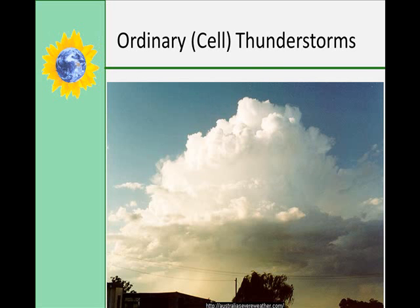Ordinary or cell thunderstorms are also known as air mass thunderstorms or pop-up thunderstorms. They typically form where surface converging winds have no significant change of either strength or direction with height — in other words, there's limited wind shearing. What goes up comes back down in the same place. This is a typical summer afternoon thunderstorm. These usually last no more than an hour, extend no more than a kilometer, and rarely produce strong winds or large hail.